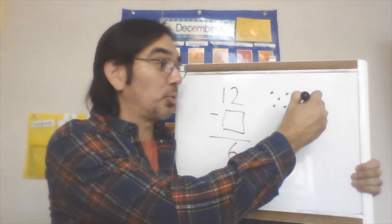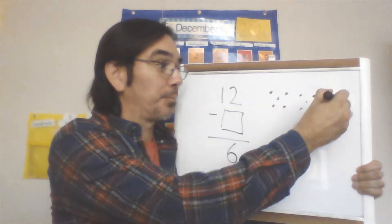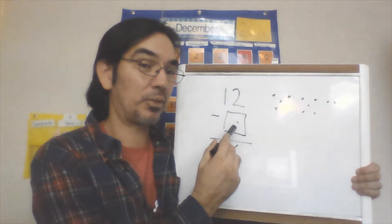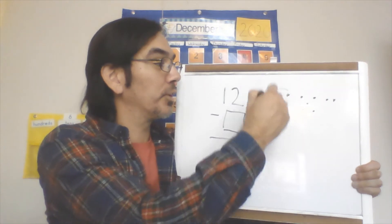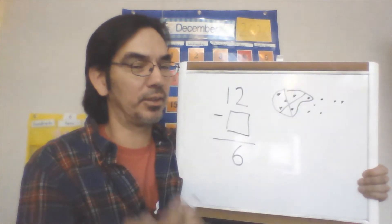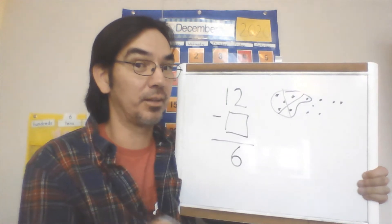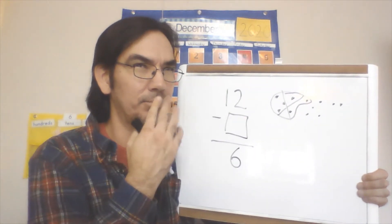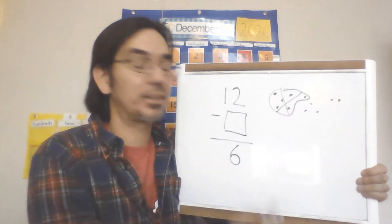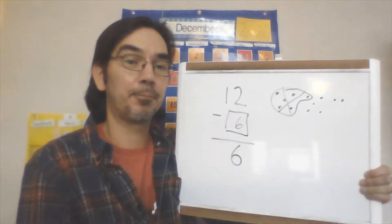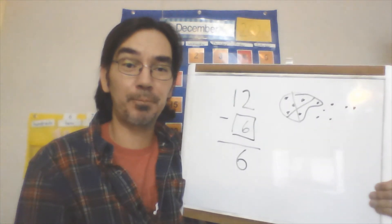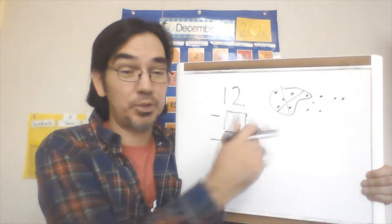I'm going to draw 12 dots over here. There we go. And now I'm going to take six of them away because that'll give me this answer. So here's five, six. And you might already know this answer if you know your doubles facts. You might be thinking, 'Hmm, that looks familiar.' One, two, three, four, five, six. Look at that.